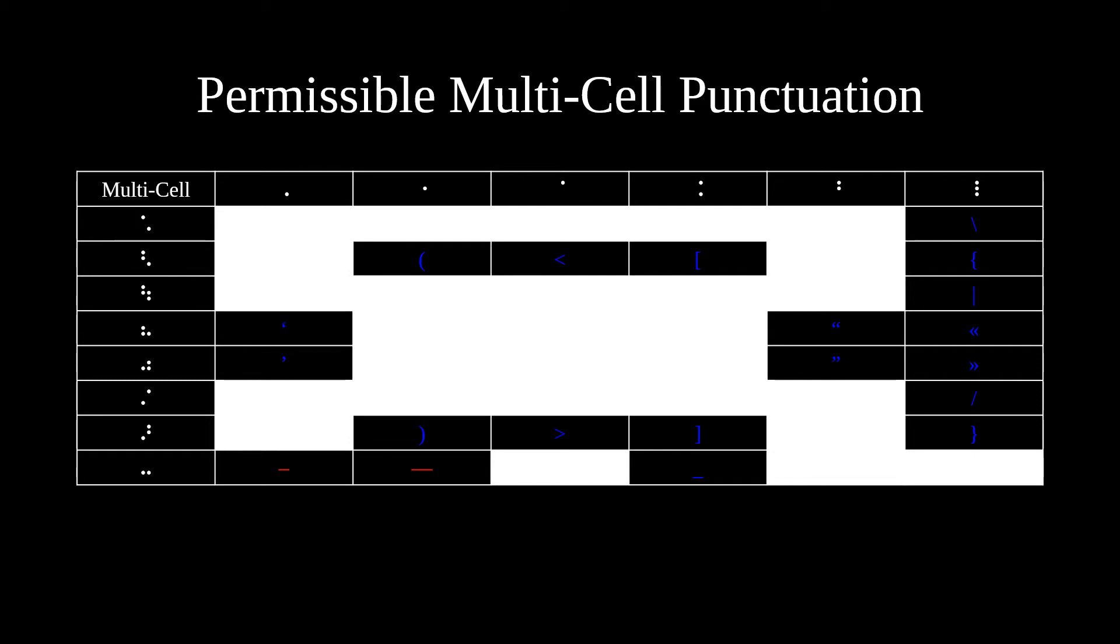Notice that two of these punctuation marks are punctuation marks that you already learned. Those two cells are the double quotation marks. To use either double quotation mark by itself, or to distinguish the double quotation marks from other types of quotation marks, you must put the 4-5 cell before each one. If you put the dot-6 cell before a quotation mark cell instead, you will make a single quotation mark.